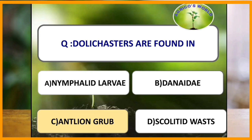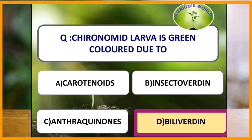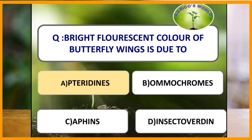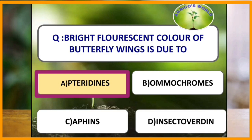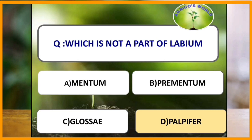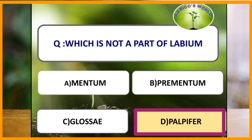Chironomid larva is green colored due to biliverdin. Bright fluorescent color of butterfly wings is due to the presence of pteridine. Pteridine is also responsible for the red color of Dysdercus. Mentum, prementum, and glossae are the parts of labium, whereas palpifer is not a part of labium.